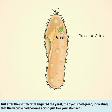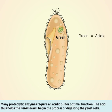Just like your stomach, many proteolytic enzymes require an acidic pH for optimal function. The acid thus helps the paramecium begin the process of digesting the yeast cells.